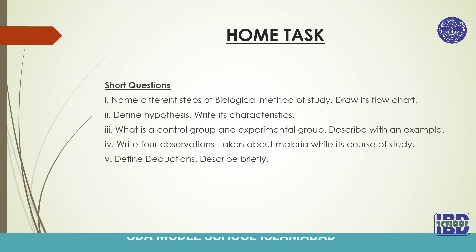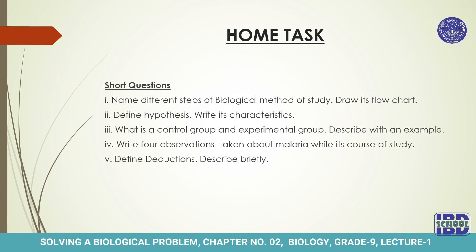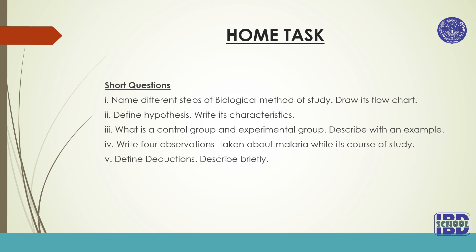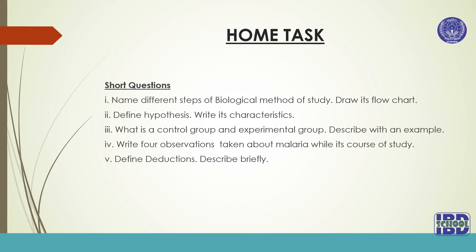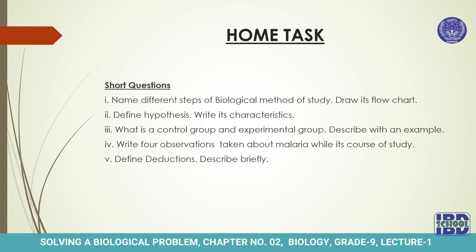Now let's look at the short questions related to this topic. Number one: name the different steps of the biological method of study and draw its flowchart. Number two: define hypothesis and write its characteristics. Number three: what is a control group and an experimental group — describe with an example. Number four: write four observations taken about malaria during its study. Number five: define deductions and describe briefly. You should do this work in your notebooks and send me photos of the work for checking. Thank you so much, Allah Hafiz.